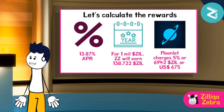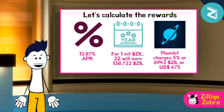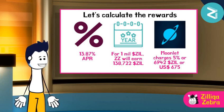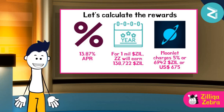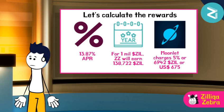Zilliqa Zebra then calculates how much he will be getting in terms of staking rewards. At the current 13.87% APR, he should be earning about 11,411 ZIL per month, or about 138,722 ZIL a year. Based on this, Moonlit will charge a fee of about 5%, or 6,942 ZIL a year, which is about $675 US dollars.